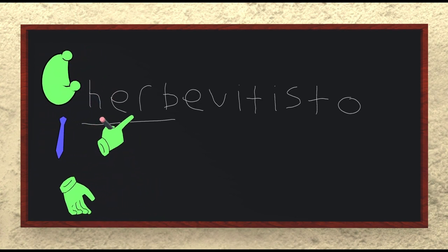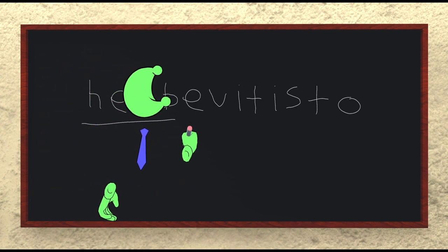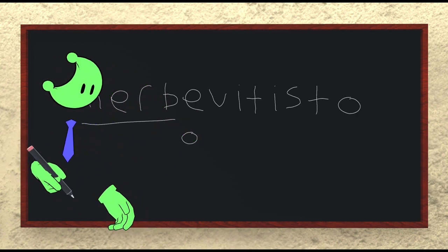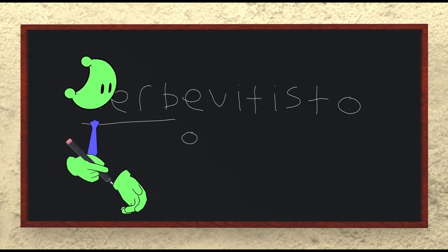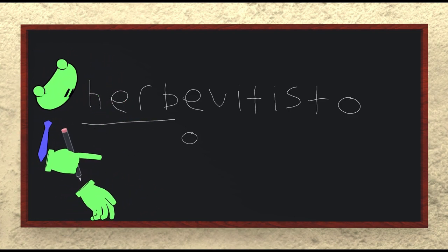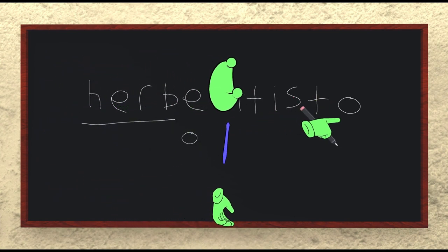The Esperanto root is Herbo, where you'd have a little O suffix here, and it means grass, or herb. Note that the suffix O here is used for most Esperanto nouns, including Herbevitisto.